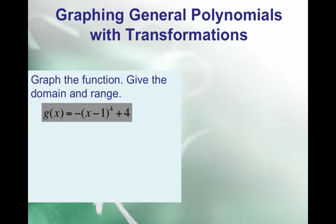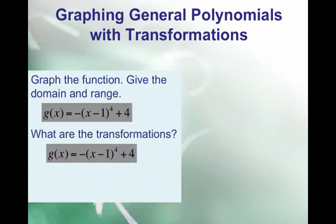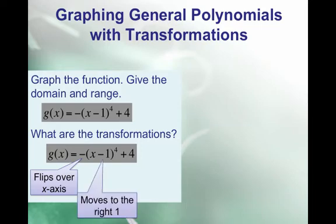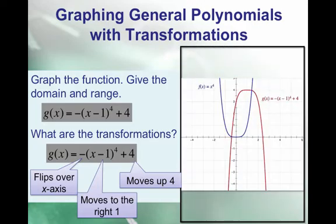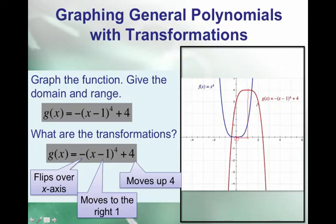What about -(x - 1)⁴ + 4? The negative out front flips the entire x⁴ over the x-axis, the minus 1 moves the graph to the right one, and the plus 4 moves the graph up 4. Comparing the blue basic function to the red new one, the vertex point moved to the right one and up 4, and the negative makes it flip. We can see how the shifted function compares to the basic function.